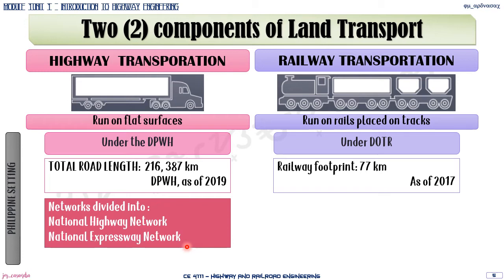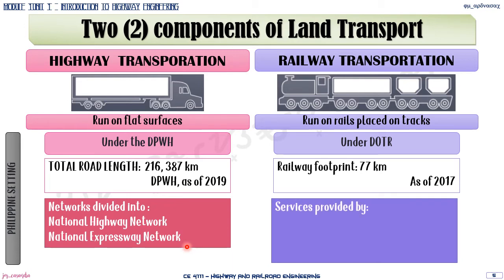For the railway transportation system, though we have a very small railway footprint, it is controlled and serviced by three offices: the Light Rail Transit (LRT), the Metro Rail Transit (MRT), and the Philippine National Railways (PNR). LRT and MRT are more private in nature, while PNR is a government-owned or government-supervised agency.